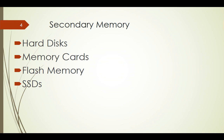Now we will talk about secondary memory. We have all heard about hard disks, memory cards, flash memories, and SSDs — these are secondary memory because they are not directly connected to the processor. They are storage devices. When we explicitly say 'memory of a system', we are talking about RAM, not secondary memory. As an embedded engineer, you must understand that 'memory' always refers to RAM.